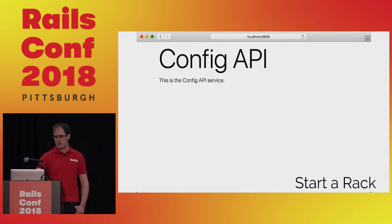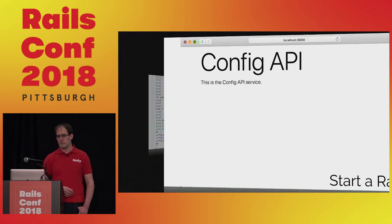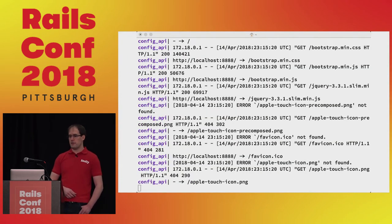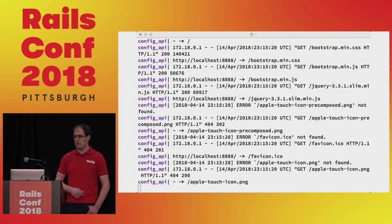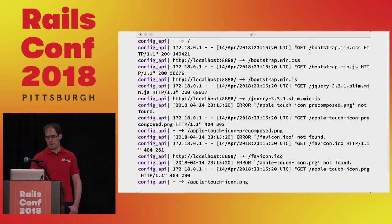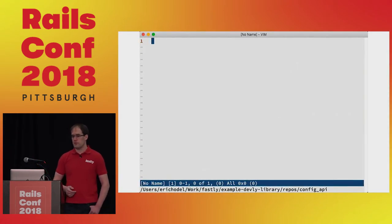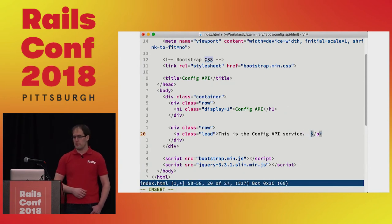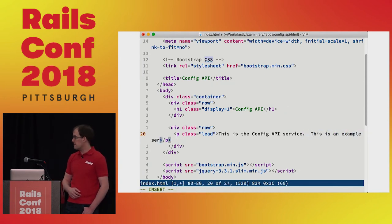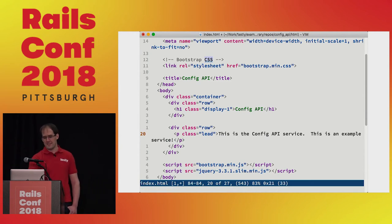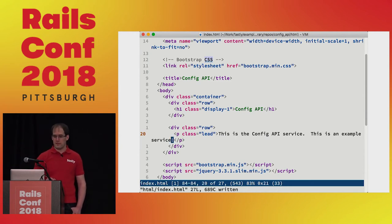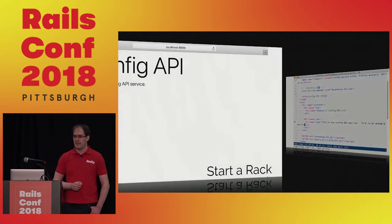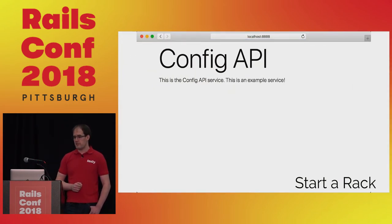We can view the logs for the rack by running Devly logs. This command will continue to follow any new logs until we exit with Control-C. Let's try out the configuration service by switching to the browser. The configuration service was running on port 8888, and when we load it we see the main page for the configuration API. Now we're triple sure that the rack is working. Let's switch back to the terminal and view the logs from this request. Devly logs shows our HTTP requests from viewing the config API main page.